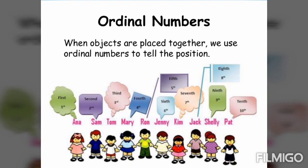We are going to define the word 'ordinal numbers.' Ordinal numbers — when objects are placed together, we use ordinal numbers to tell the position. As you can see in the picture below, these are examples of ordinal numbers.